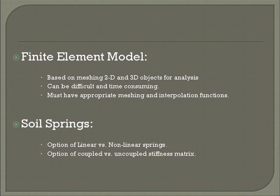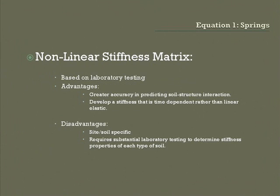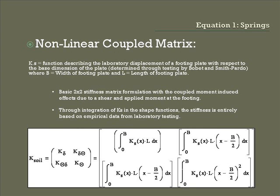By generating a soil spring stiffness matrix, you have the option of a linear versus a nonlinear spring. You can also use a coupled versus an uncoupled stiffness matrix. A nonlinear stiffness matrix must be based on laboratory testing. Advantages of a nonlinear stiffness matrix include greater accuracy in predicting soil structure interaction and the ability to develop a time-dependent stiffness rather than strictly linear elastic. Disadvantages include requiring extensive testing to determine soil properties and nonlinear characteristics. Bobay and Smith-Pardo developed an actual model of the nonlinear soil characteristics. As seen in the 2x2 stiffness matrix, the stiffness function is integrated based on chosen shape functions, with coupled terms visible in the lower left and upper right corners of the matrix.